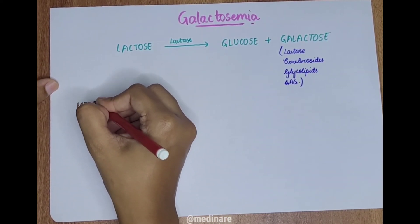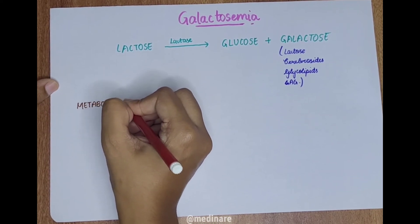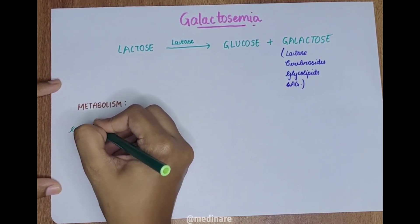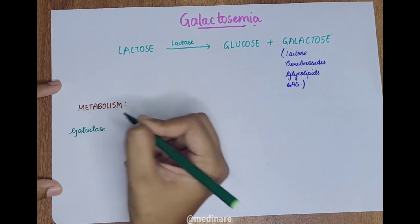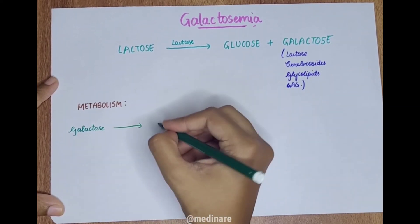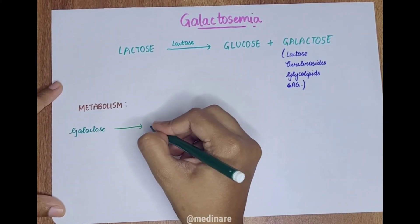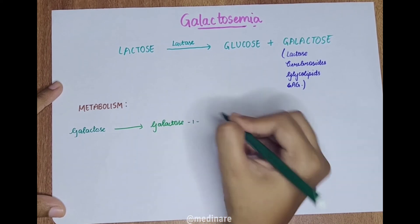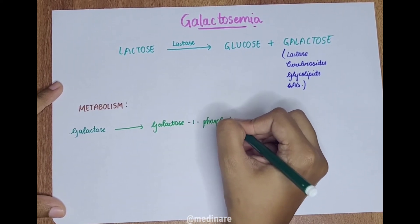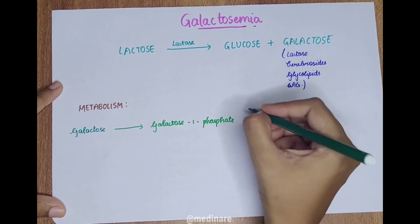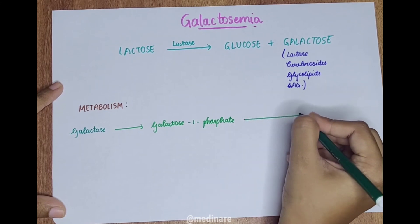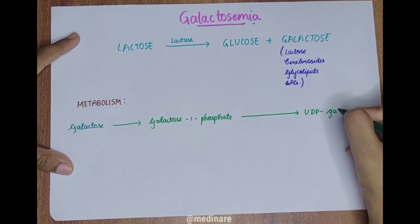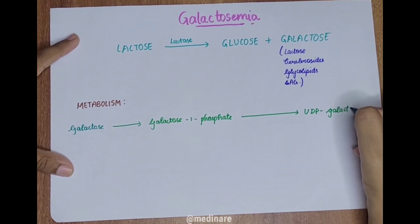Our body metabolizes galactose in the following way. After it is split up from the lactose, galactose is converted into galactose-1-phosphate with the help of an enzyme called galactokinase. The galactose-1-phosphate is then converted into UDP-galactose with the help of an enzyme galactose-1-phosphate uridyl transferase.